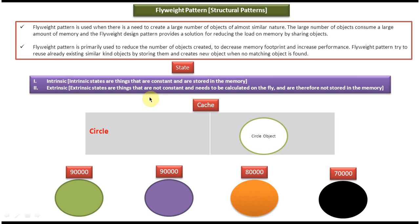The key thing in Flyweight design pattern is the two states. The first state is Intrinsic and the second state is Extrinsic. Intrinsic states are things that are constant and are stored in memory — in this case, circle shape is constant, so circle shape is intrinsic. Extrinsic states are things that are not constant and need to be calculated on the fly, therefore not stored in memory. In this example, circle color is extrinsic because it is not constant and will be decided on the fly.